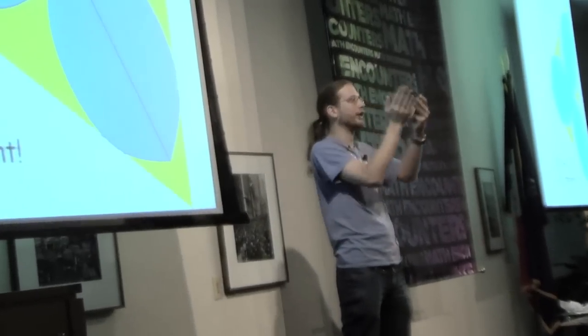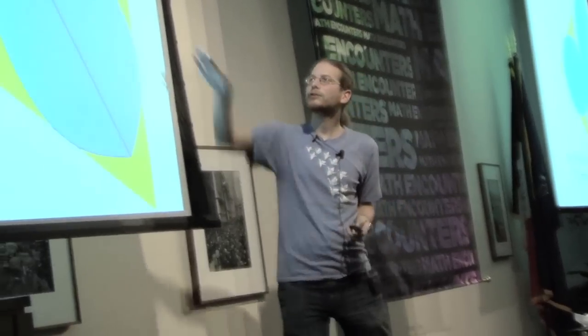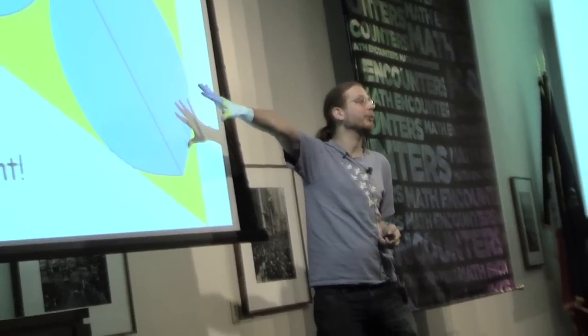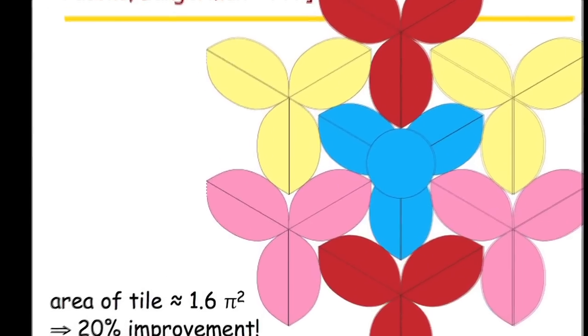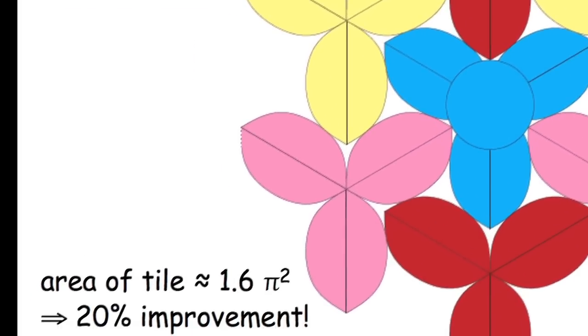Because if you start with a big sheet, you can cut triangles and not waste any material. If you just want to make these shapes and not waste material, you can pack them together pretty close. And then you save 20%.